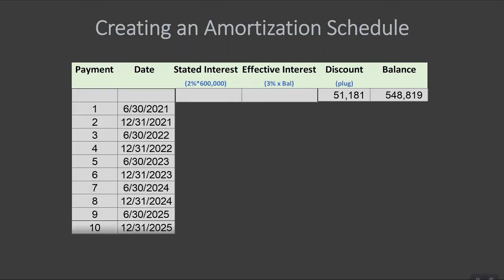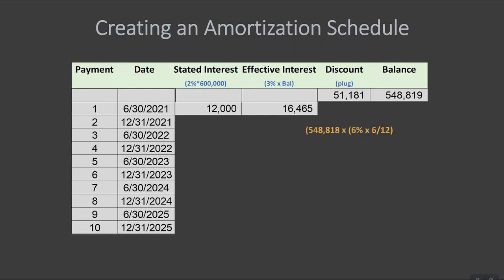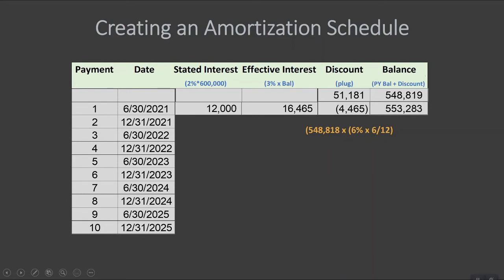An amortization schedule, once set up, will determine all of your journal entries for the life of the bond. We'll assume this bond started January 1, 2021, so our first payment occurs June 30th. That first payment has a stated interest of $12,000, effective interest of $16,465 — the balance times 3% — and the difference of $4,465 is our plug, which decreases the discount. What that also does is increase our net balance, so the new net balance will be $553,283. As the discount goes down, the net balance on the balance sheet goes up. You can check: $51,181 minus $4,465 plus $553,283 should equal $600,000.